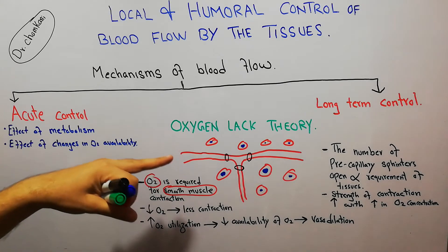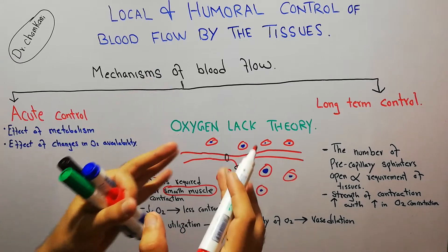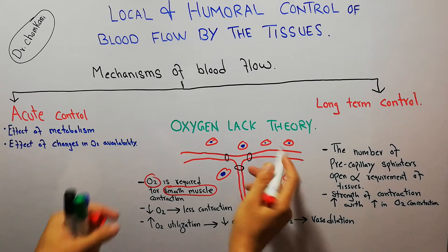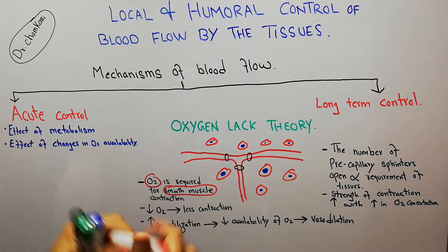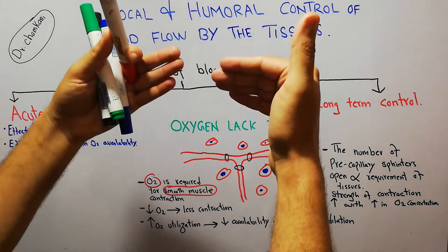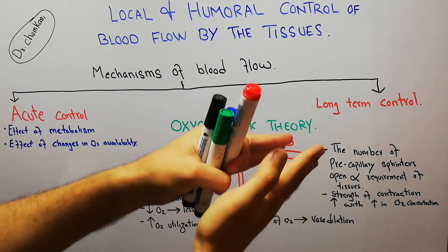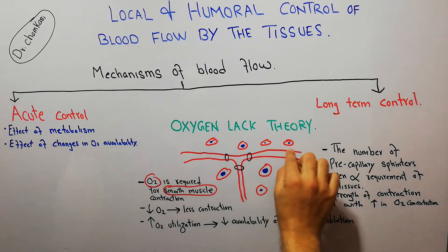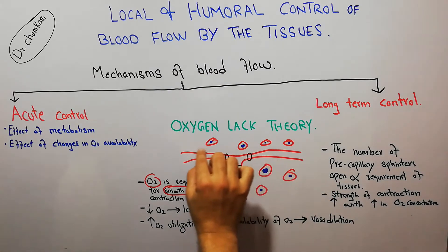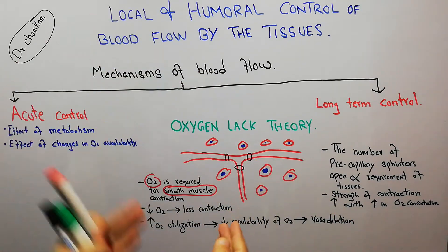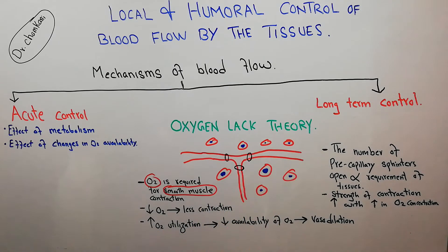When the supply of oxygen decreases, contraction is reduced because oxygen is needed for contraction of these blood vessels. With less oxygen, less contraction occurs and dilation results. With dilation, blood flow increases, compensating for the decreased oxygen supply.